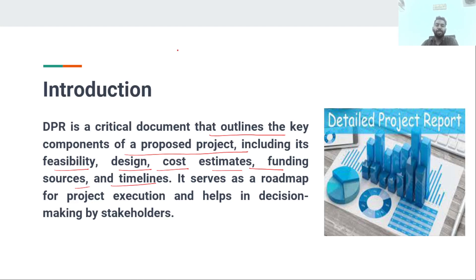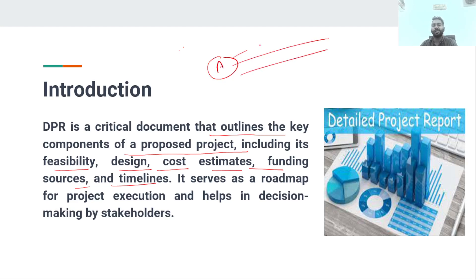In this document, we have to prepare details covering whether the project is feasible, what is the design, what will the cost estimate be, and what will the funding sources be — for example, the central government, the state government, or other governments. We also need to define the timeline. For example, a highway project converting a four-lane highway between city A and city B into a six-lane highway.